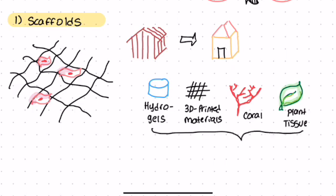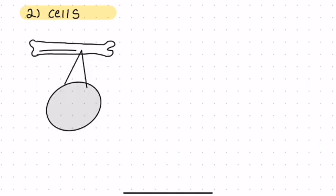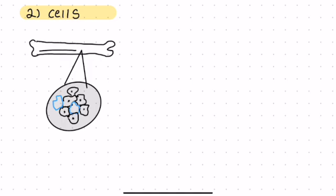The next part of tissue engineering is the cells. The cells we use are based on the type of tissue we're trying to create. For instance, if we're trying to engineer a bone tissue, we would likely use bone cells.